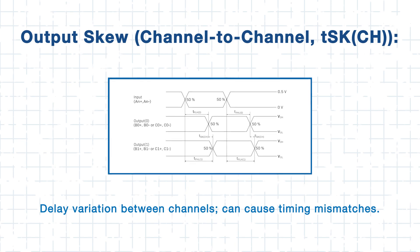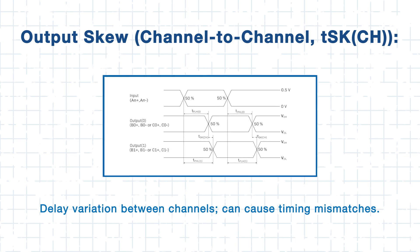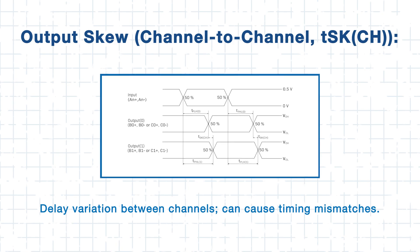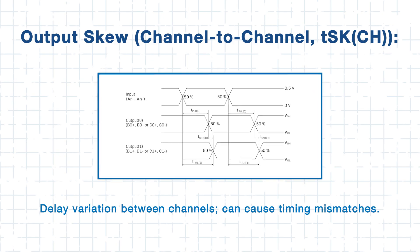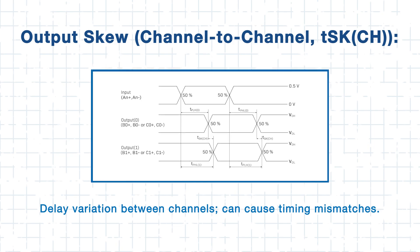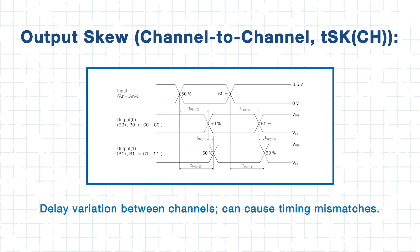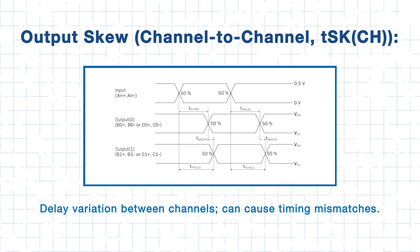Lastly, we have channel-to-channel skew, which reflects the delay variation between separate signal paths where even slight differences can cause timing mismatches. These skews are typically shown in timing diagrams. Keeping them minimal is important for maintaining eye diagram integrity and reducing jitter in high-speed multi-lane systems. Together, these metrics provide a clear picture of signal timing performance, enabling engineers to design a more reliable and synchronized data path.